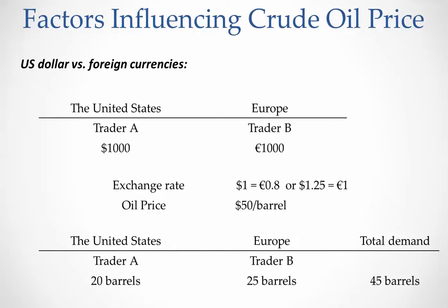So we have 20 barrels of demand from trader A inside the United States and 25 barrels from trader B outside the United States, for a total demand of 45 barrels. Demand has increased from 40 barrels to 45 barrels when the dollar lost its value. This means the demand curve shifts, which changes the market equilibrium price for crude oil and potentially increases the crude oil price when the dollar has lost its value.